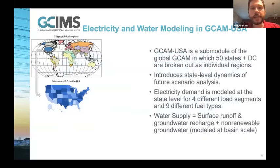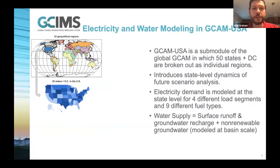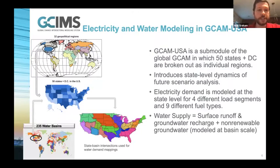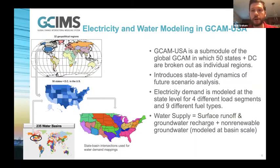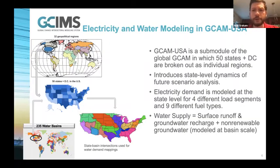GCAM-USA is a sub-module of the global GCAM model, which breaks out 50 states plus Washington DC as individual regions, allowing us to represent state-level dynamics for future electricity generation and demands. We have electricity demand broken into four different load segments modeled in each state. Water supply within any given basin is represented by the total surface runoff plus groundwater recharge and non-renewable groundwater available within that basin. This allows us to get the amount of water available within each state by looking at the basins themselves.